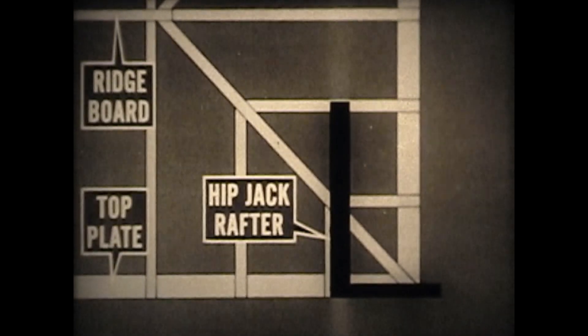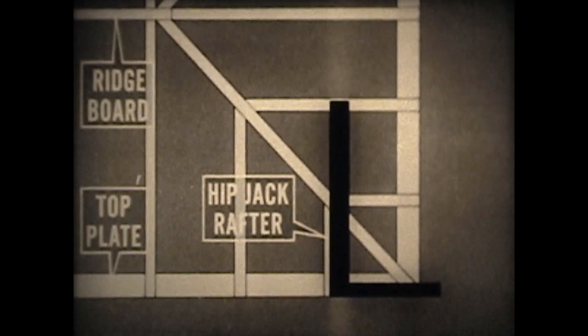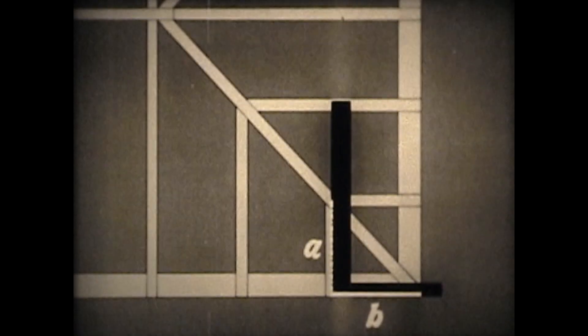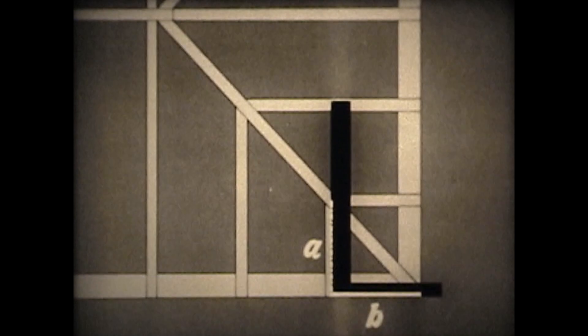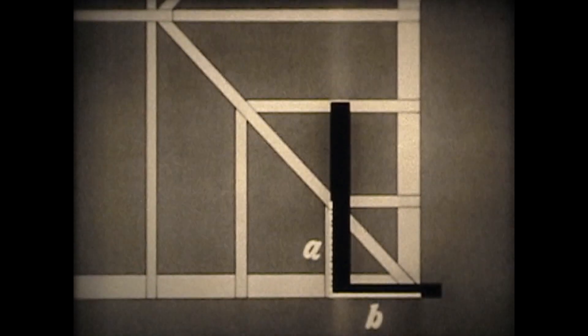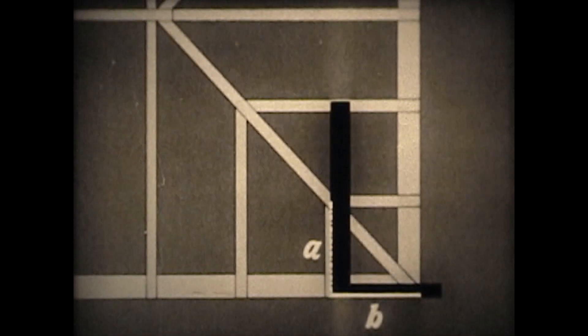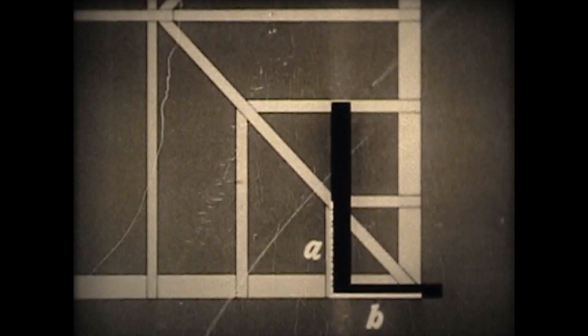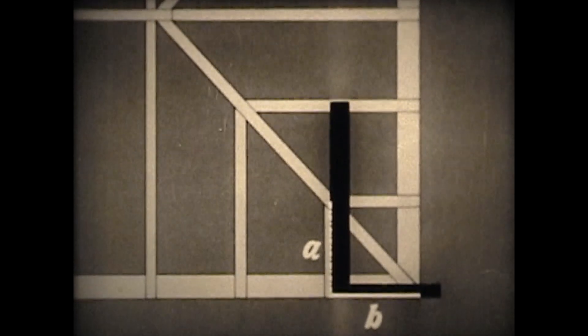Looking down on the roof, we notice that distance A is the same as distance B. In other words, the run of the jack rafter is exactly the same as the distance between the center line of the jack rafter and the corner of the building. Therefore, to get the cut at this end of the rafter, we flop the square over and hold the line length of the rafter on one leg of the square and the run of the rafter on the other leg.